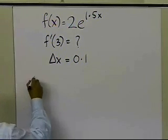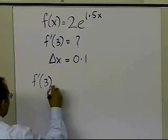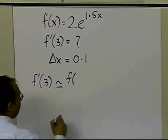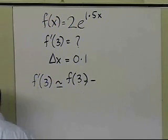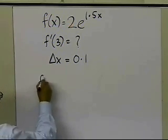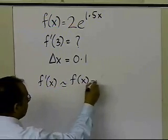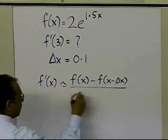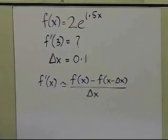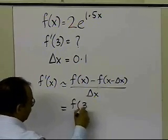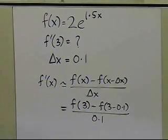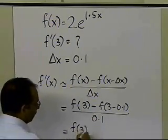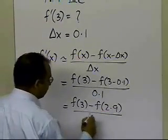The derivative of the function at 3 is approximately equal to: f prime of x is approximately f of x minus f of x minus delta x, divided by delta x. This turns out to be the value of the function at 3, minus the value of the function at 3 minus 0.1, divided by 0.1. That gives the value of the function at 3, minus the value of the function at 2.9, divided by 0.1. This is still rise over run — the rise between the function values at 2.9 and 3, and the run of 0.1.